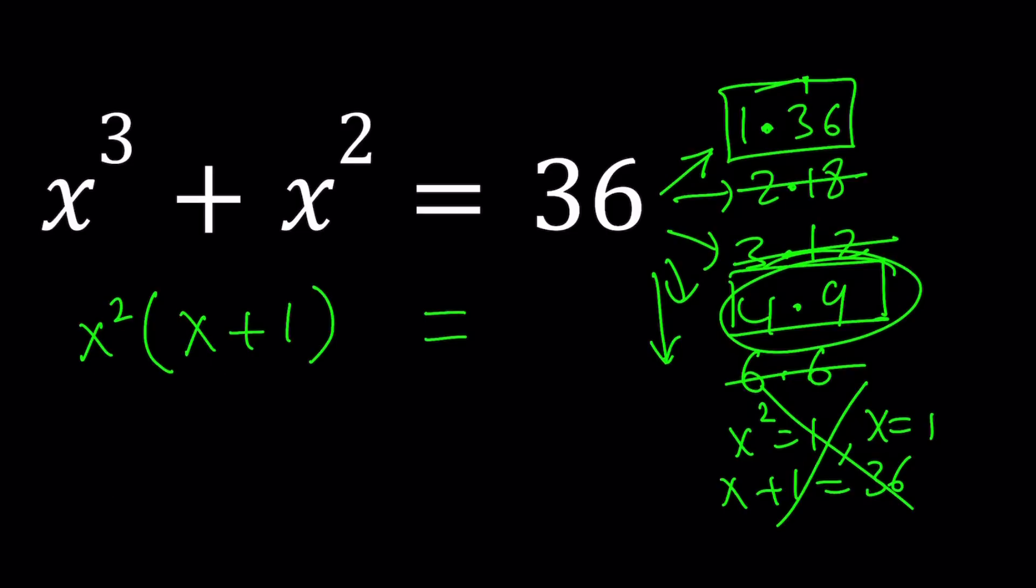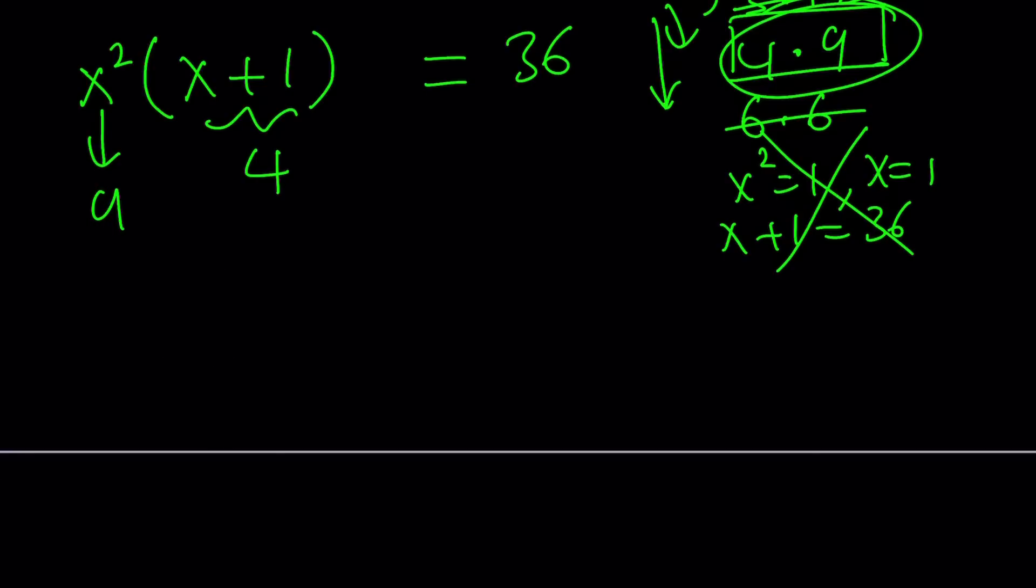In other words, 4 and 9 has to be like this. x is going to be 3, so that this is 9 and this is 4. And so basically we were able to write 36 as the product of two numbers in this format, which means x equals 3 is a solution. That's one of the solutions though.